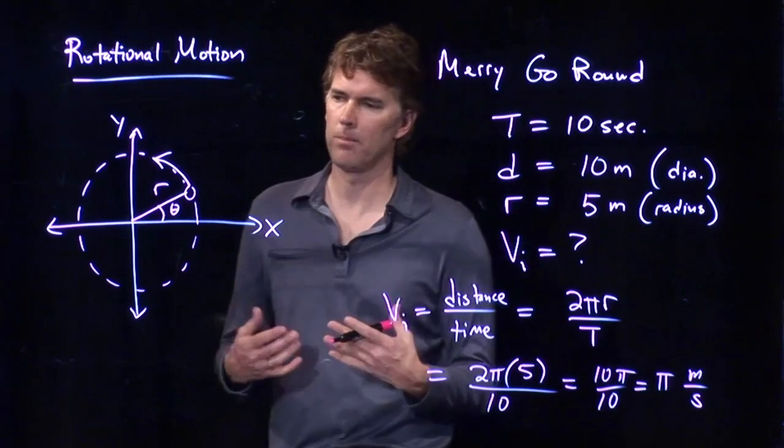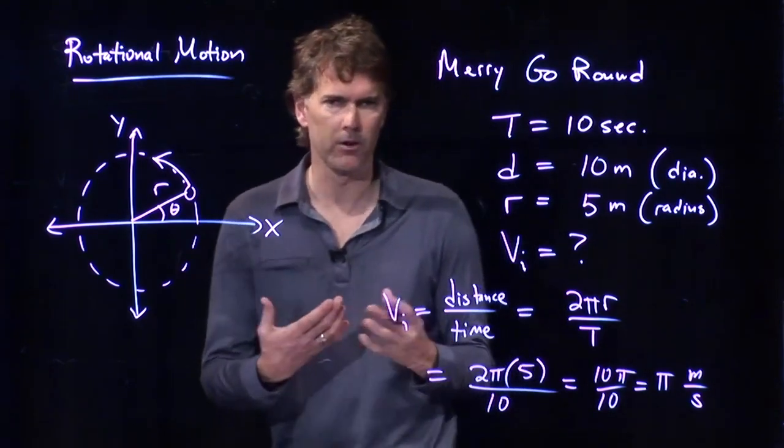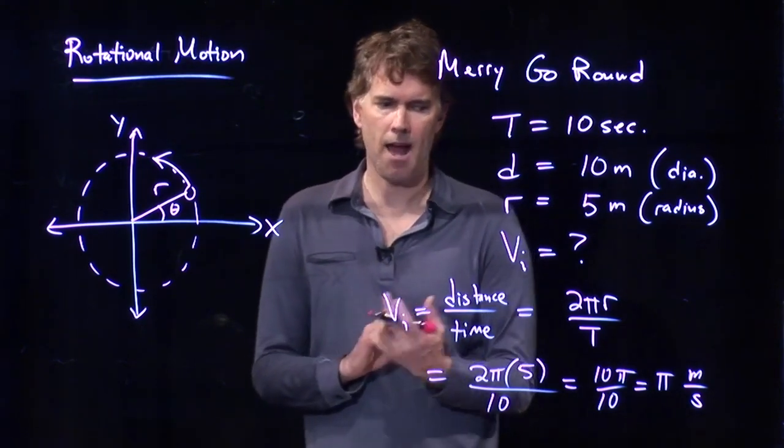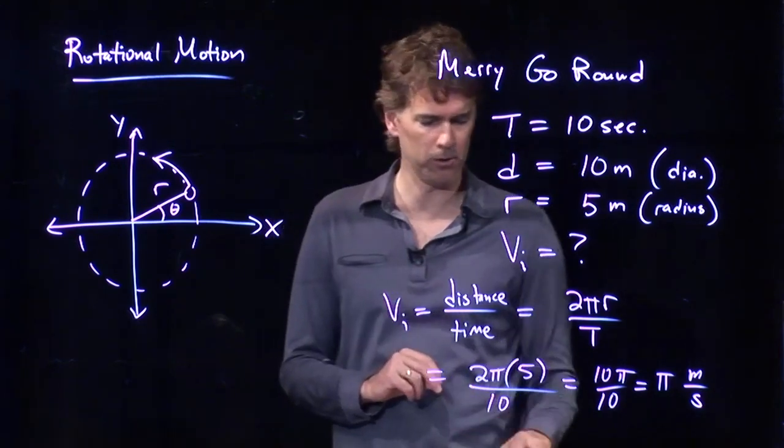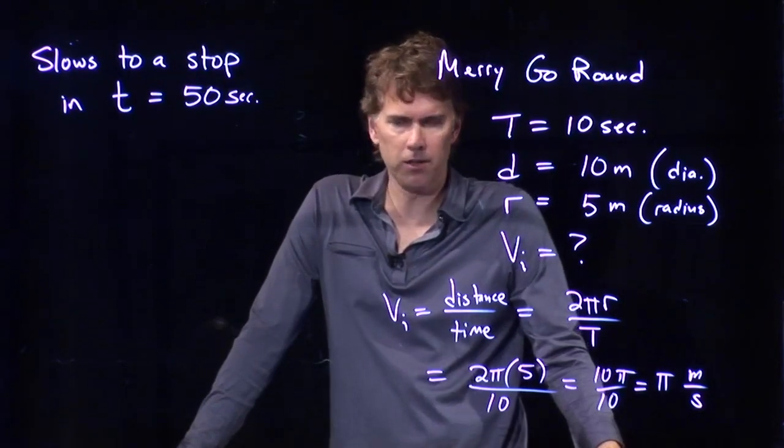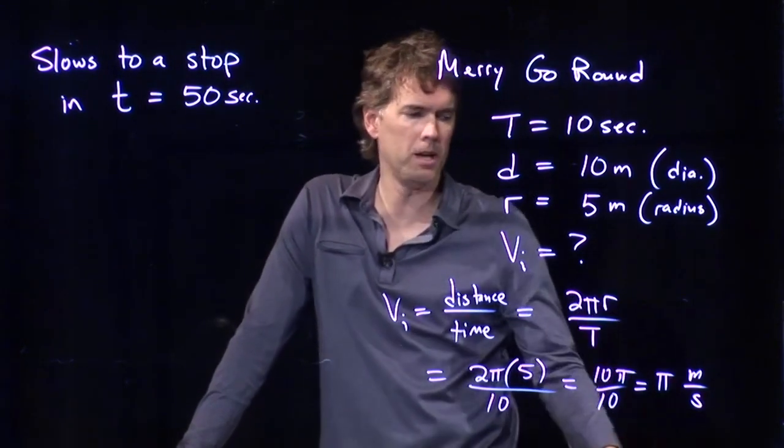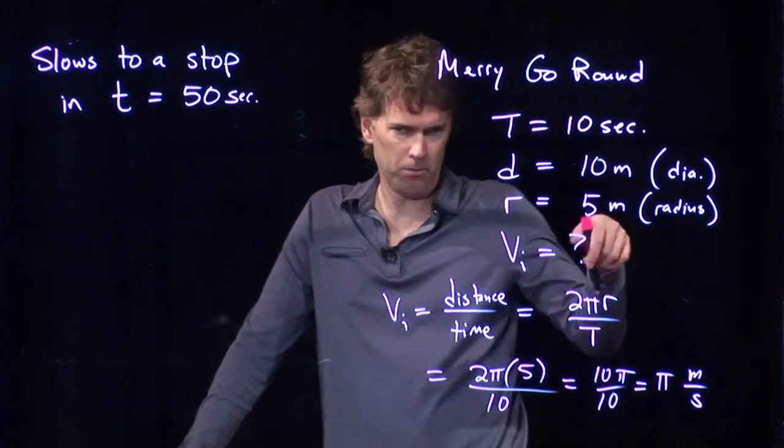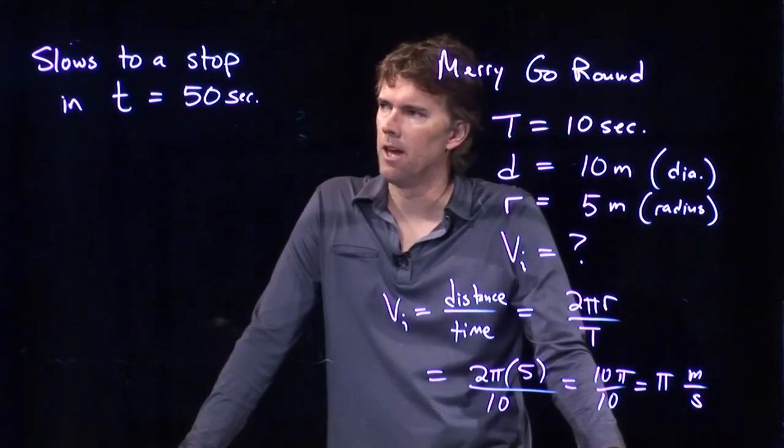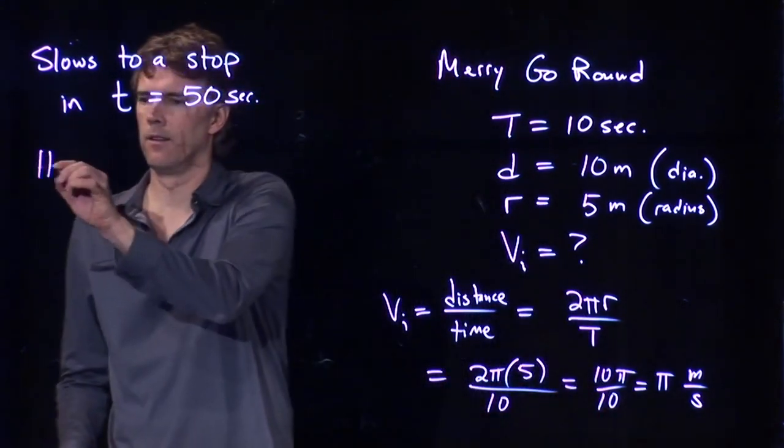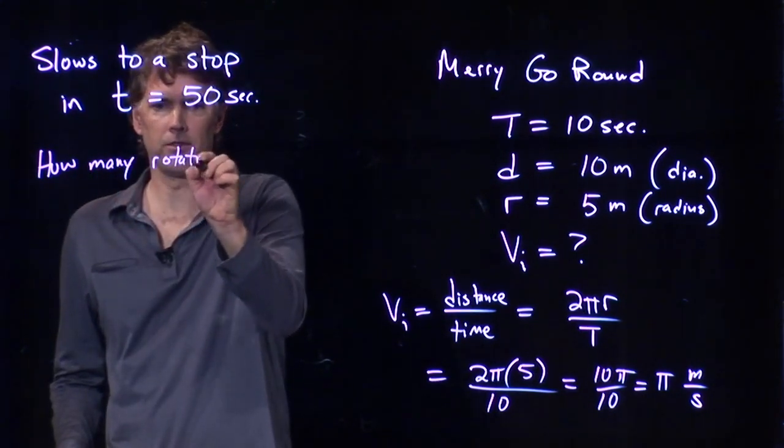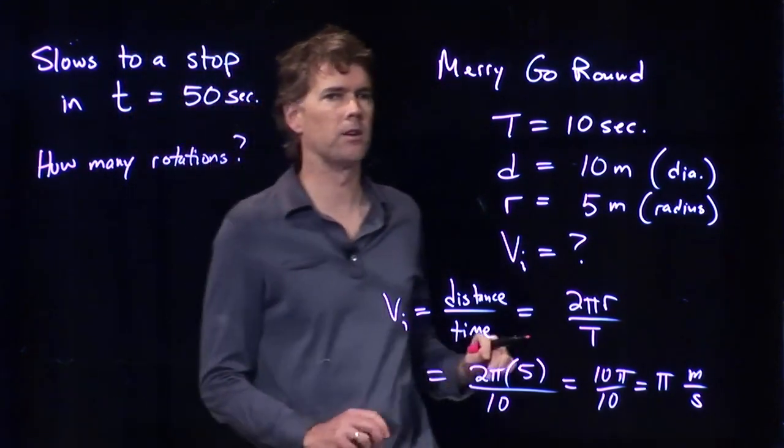So let's add a little complication. Let's say that the merry-go-round is going to slow down to a stop. And let's see if we can figure out how far it's going to rotate as it slows to a stop. Okay, we've got a merry-go-round that is initially spinning. And it's spinning at a speed of 3.14 meters per second. The person on the edge of the merry-go-round is going around that fast. And let's ask the question, how far will it rotate if it comes to a stop in 50 seconds? How many rotations is it going to go through?